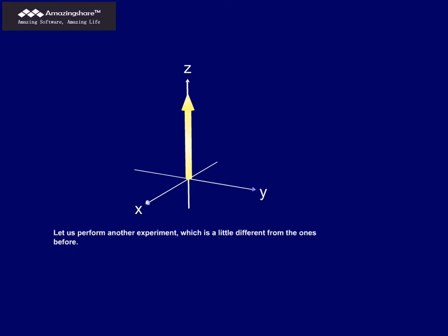Let us perform another experiment, which is a little different from the ones before. First, we use a 90-degree pulse. The longitudinal magnetization is tilted. We get a transversal magnetization.